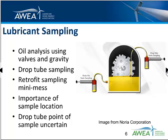Thank you, Bruce. Grease certainly lags oil when it comes to sampling and analysis. Oil analysis, which may be applied in wind turbines to perhaps the main gearbox, is achieved usually using valves and gravity to allow the oil to flow out of the reservoir. Sometimes folks use drop tube sampling, where a tube is inserted at the top and oil is extracted using a vacuum pump. Sometimes machines are retrofitted with a mini mess or sampling valve that allows a more consistent sample location.